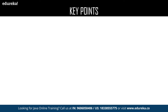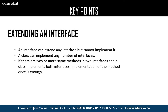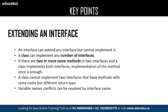The next key point is extending an interface — an interface can extend any number of interfaces but cannot implement them, whereas a class can implement any number of interfaces. If there are two or more methods with the same name in different interfaces, the class can implement all interfaces but one single method is enough to perform the operation. A class cannot implement two interfaces that have methods with the same name but different return types. The major advantage is that variable name conflicts can be easily resolved using the interface name.